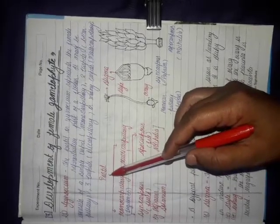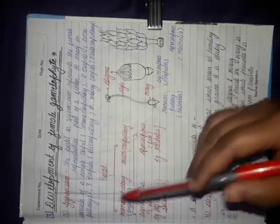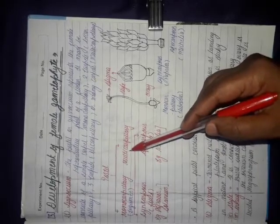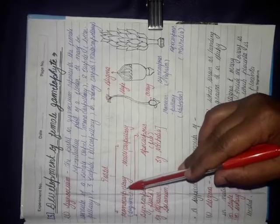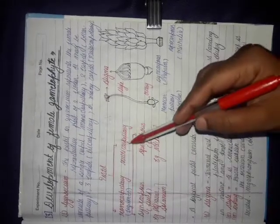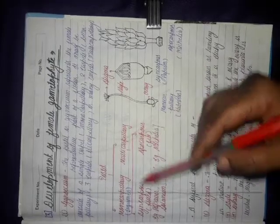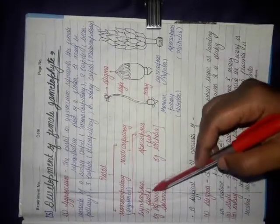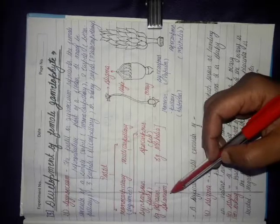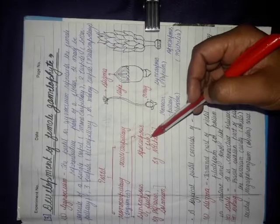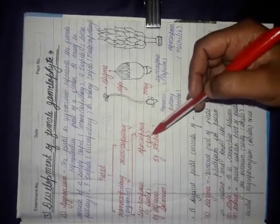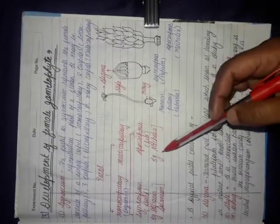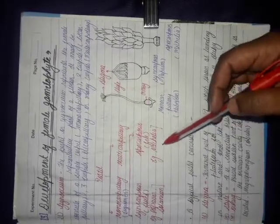According to NCERT, pistils are divided into two conditions. The first is the monocarpellary condition — the flower contains a single carpel, example is legumes. The second is multicarpellary, which is further of two types: syncarpous and apocarpous. Syncarpous means fused condition; examples are Papaver and Solanum. Apocarpous means free pistils — the gynoecia are free from one another and not joined at any point. The example from NCERT is Michelia.